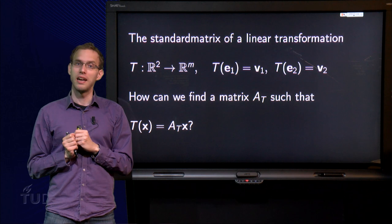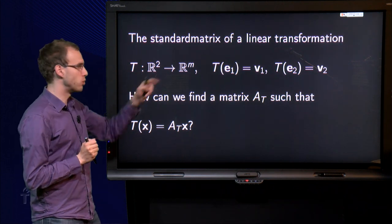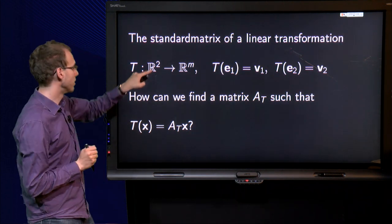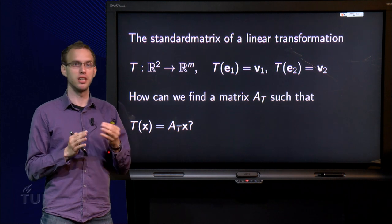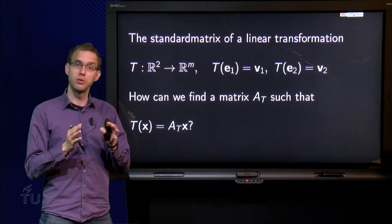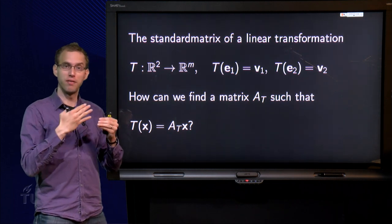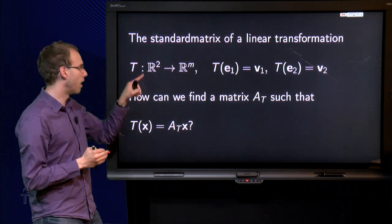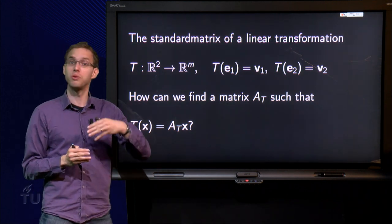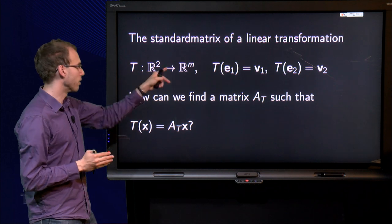Let us look at the transformation T from R2 to Rm. We take R2 here first, instead of Rn, just to limit the number of vectors we need to write. If you know how to do it for R2, you also know how to do it for R3 and R4.